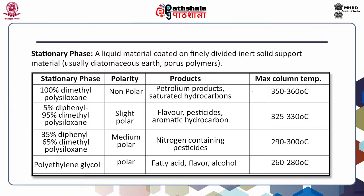For example, 100% dimethyl polysiloxane is a nonpolar stationary phase preferred for petroleum products and saturated hydrocarbons. Polyethylene glycol is a polar phase preferred for fatty acids, flavour, and alcohols. These stationary phases have different temperature maxima — they can remain stable up to a certain temperature and afterwards start degrading. The selection of stationary phase depends upon the type of material to be separated. A polar material will stick more to a polar stationary phase and elute at a later stage, and polar phase is generally more suitable for compounds with different functional groups but similar boiling points.